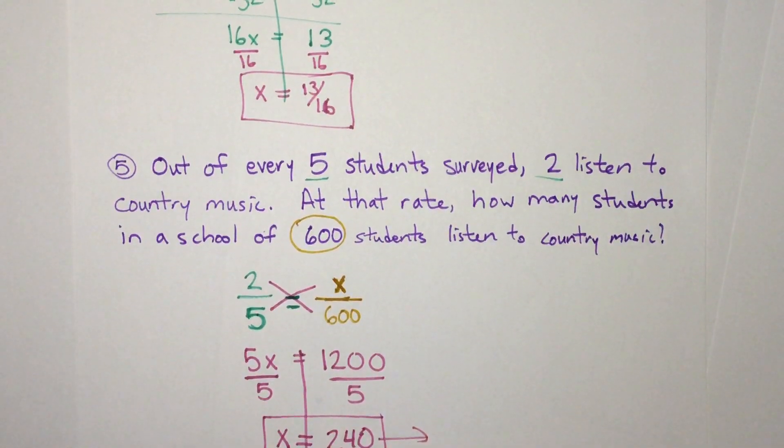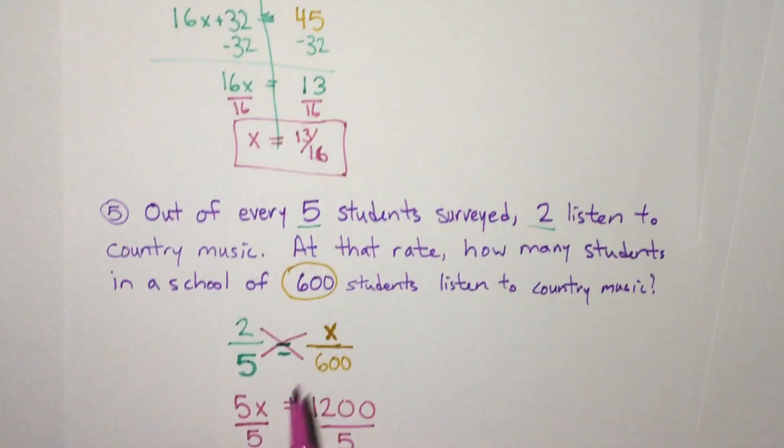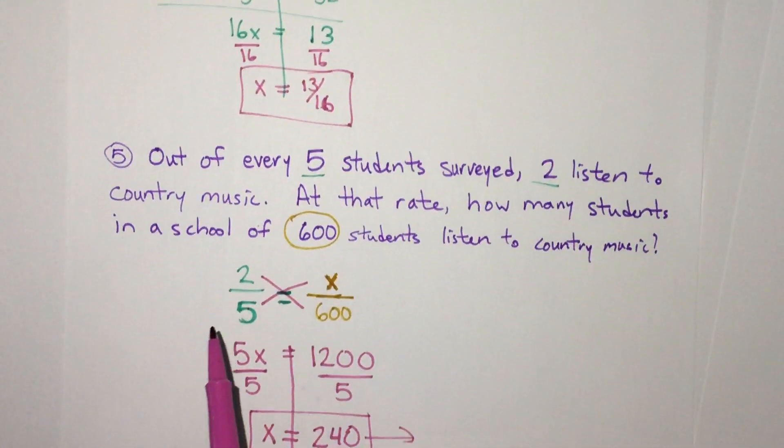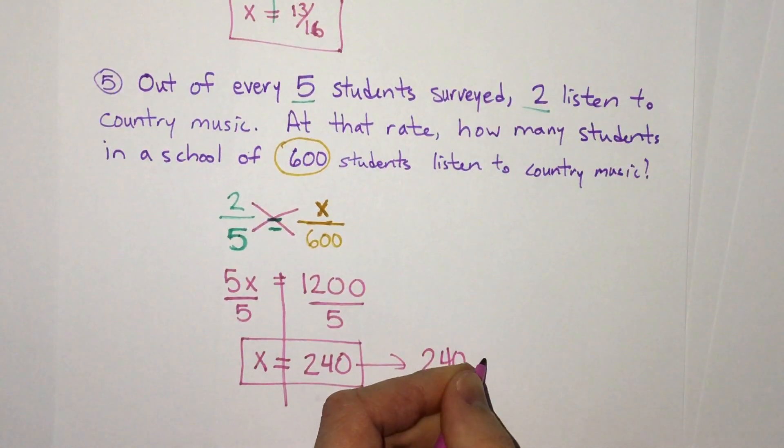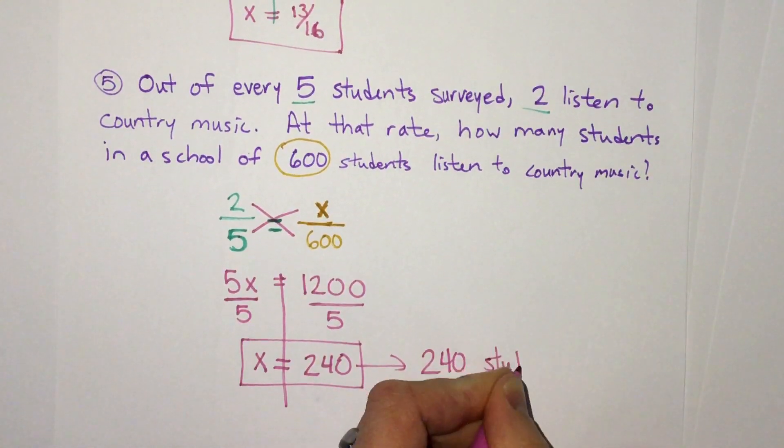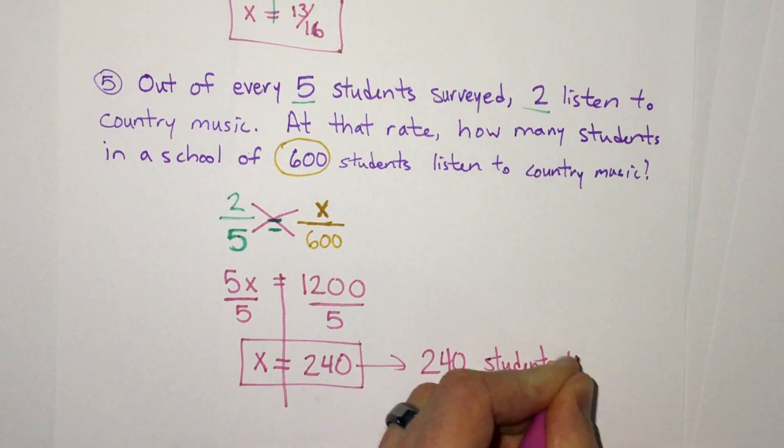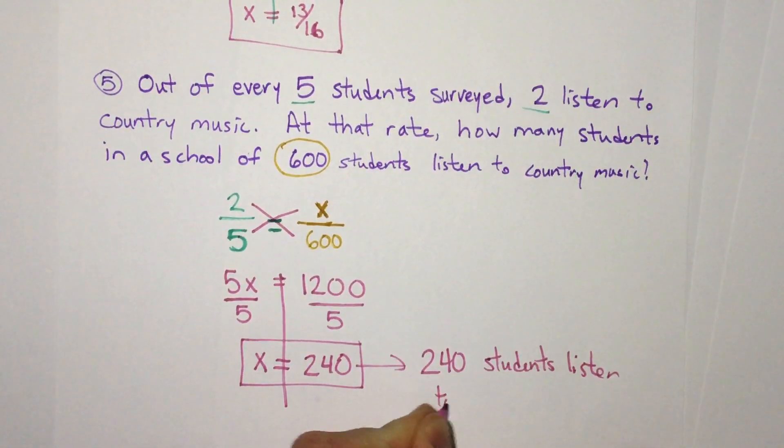And remember, this is a word problem. So it asks, how many students in a school listen to country music? Out of 600 students, 240 students listen to country music.